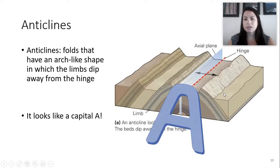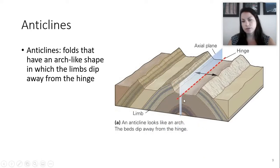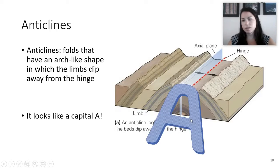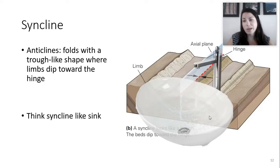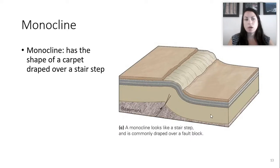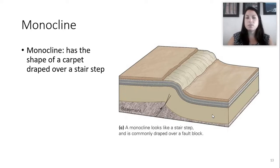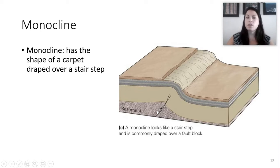A good way to remember anticline is that it looks kind of like the letter A - you can see it's folded over in itself. The opposite is a syncline, where folds form like a trough. The way I try to remember syncline is that it looks like a sink - sink, syncline. A monocline has the shape of a carpet draped over a stair step. It's not quite folded all the way onto itself like an anticline or syncline - it just has one little step. It's usually associated with a fault below, with the layers above draping over that displacement.